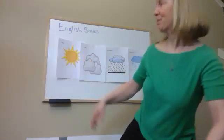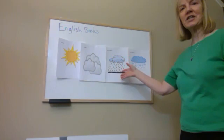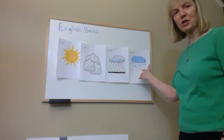Here you have sunny, cloudy, rainy, and snowy. Rainy is usually in the spring and the summer, and snowy is usually in the winter or fall.